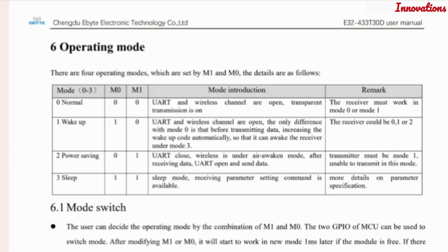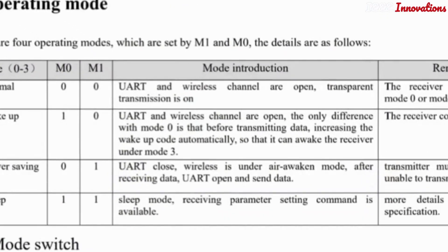M1 zero means we need to connect to ground. One means we need to connect to 5 volts. Now we are using LoRa in normal mode, transmitting as well as receiving. If M0 and M1 are zero, UART and wireless channel are open with transparent transmission.